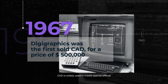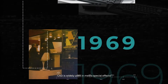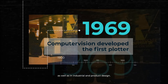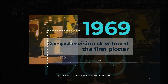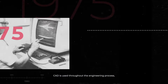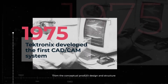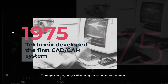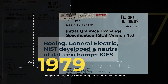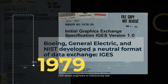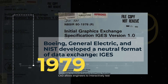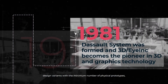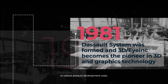CAD is widely used in media special effects and computer animation, as well as in industrial and product design. CAD is used throughout the engineering process, from the conceptual product design and structure, through assembly analysis, to defining the manufacturing method. CAD allows engineers to interactively test design variants with the minimum number of physical prototypes to reduce product development costs.